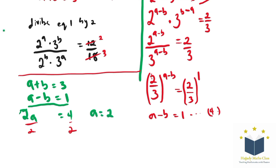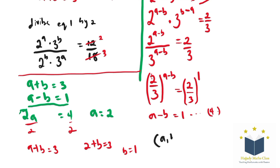So when you plug in A equals 2 into equation 3, you have A plus B equals 3. Since my A is 2, we have 2 plus B equals 3. And then finally, B equals 1. So for the pair, A comma B equals 2 comma 1.